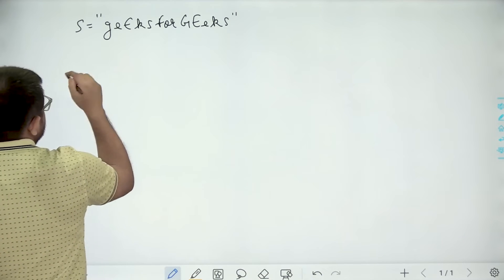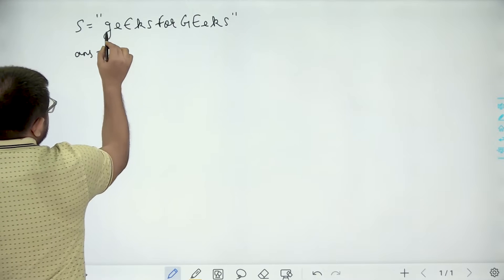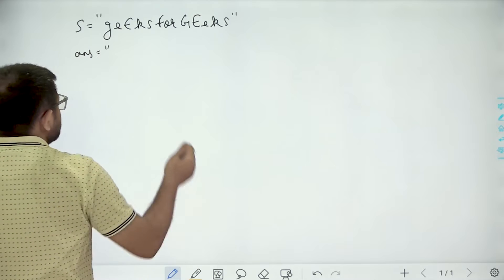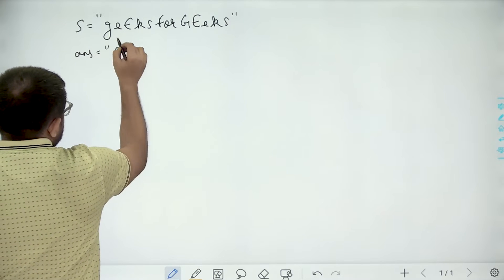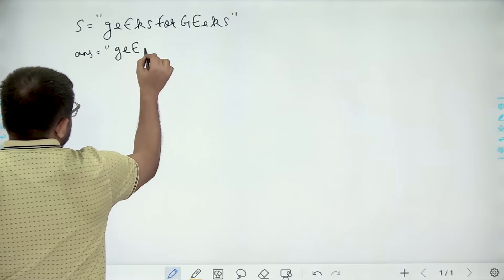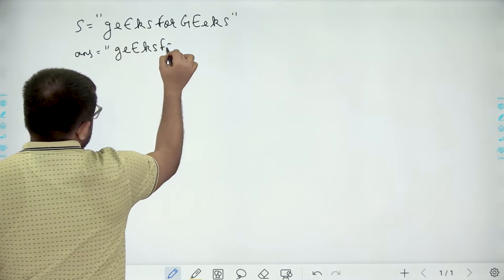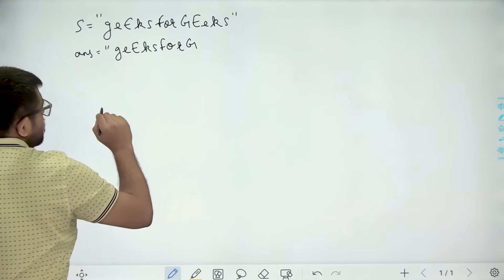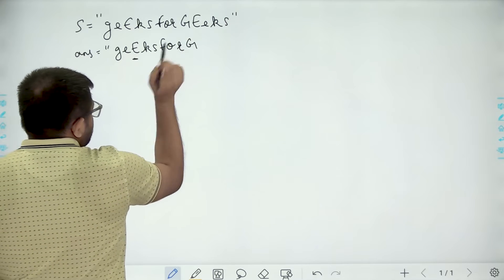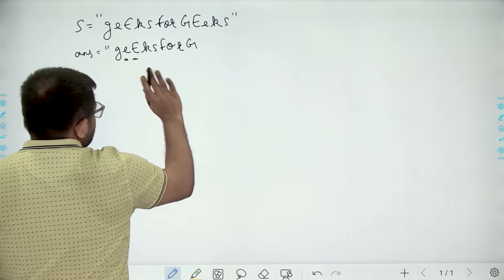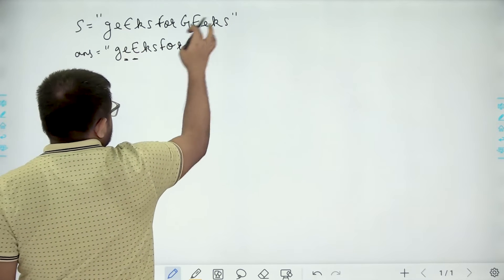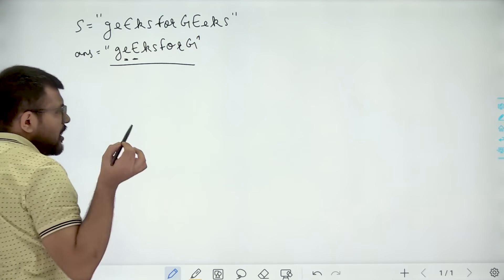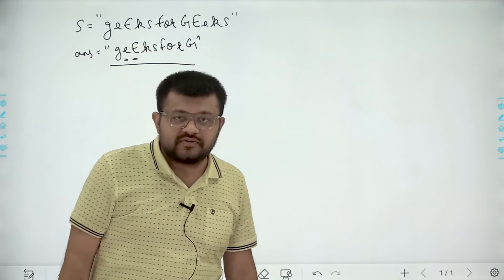For example, for this original string, my answer string will be constructed by moving from left to right, keeping the first copy of all characters. I take 'G', then small 'e', then capital 'E', then 'K', then 'S', then 'F', then 'O', then 'R', then capital 'G'. Capital 'E', small 'e', 'K', and 'S' we already have, so we skip them. The output has all unique characters with no duplicates.